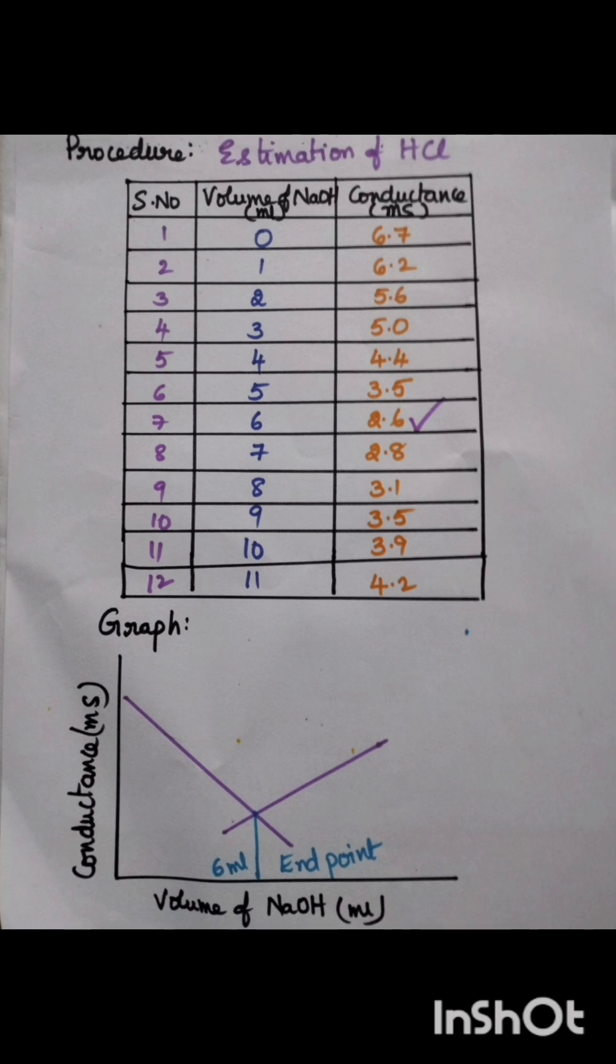A graph will be drawn between volume of NaOH and conductance. It yields two straight lines. The intersection of the two straight lines gives the end point. So coming to the calculations.